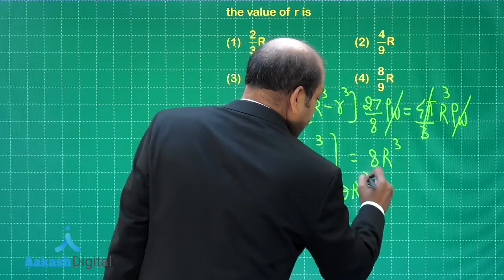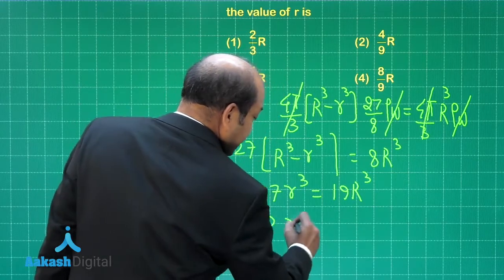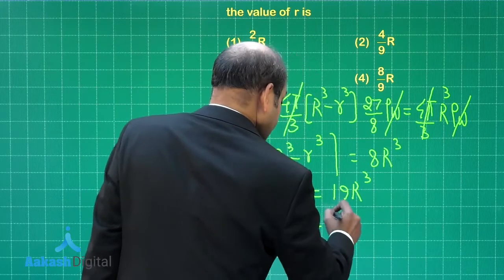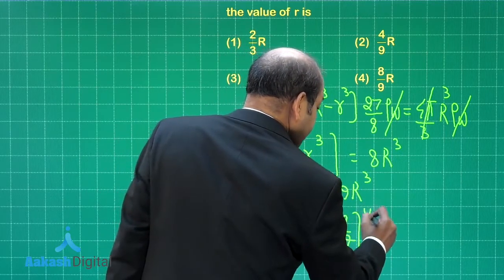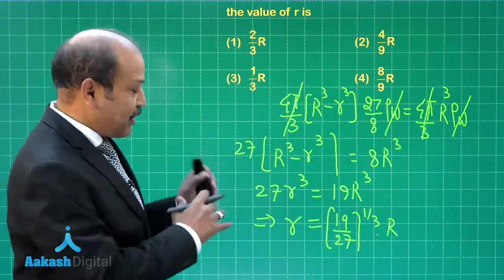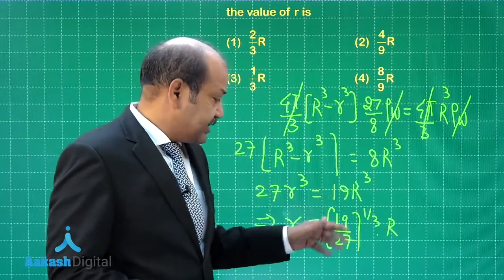Simplifying it further we get 27 small r cube is equal to 19 times capital R cube. Or the value of small r is then coming out as 19 by 27 to the power 1 by 3 multiplied by capital R. This is what we are getting and in fact 27 to the power 1 by 3 is 3 itself.